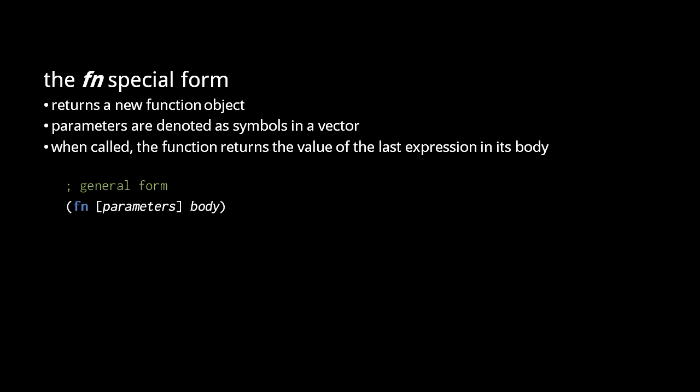The fn special form creates and returns a function object. The general form is fn parameters body, where parameters is 0 or more symbols, naming the parameters of the function, and body is one or more expressions that run when the function is invoked. Be clear that the function form encloses the parameters in a vector simply to distinguish its parameters from its body. Once the function object is created, there is no vector associated with the parameters. You'll see vectors used this way in a number of special forms and macros, because vectors are visually distinct from lists.